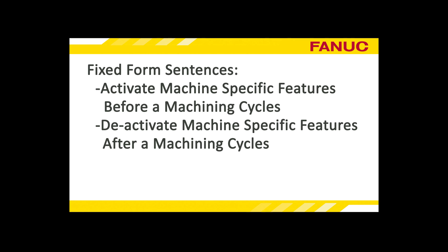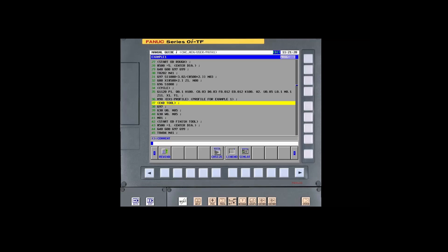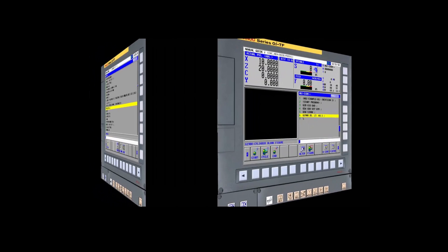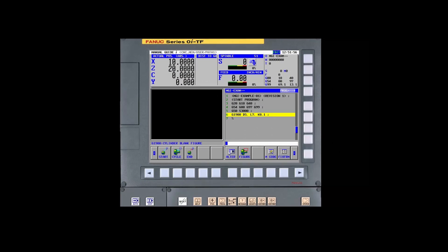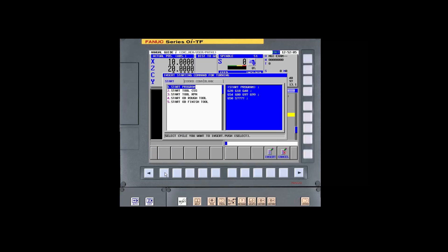In these tutorials, we use the term 'start tool' to describe activating machine-specific features before performing a machining cycle, and 'end tool' to describe deactivating machine-specific features after performing a machining cycle. In practice, the Machine Tool Builder, Machine Tool Distributor, or an experienced programmer at your company will create fixed-form sentences for less experienced Manual Guide I programmers to use.